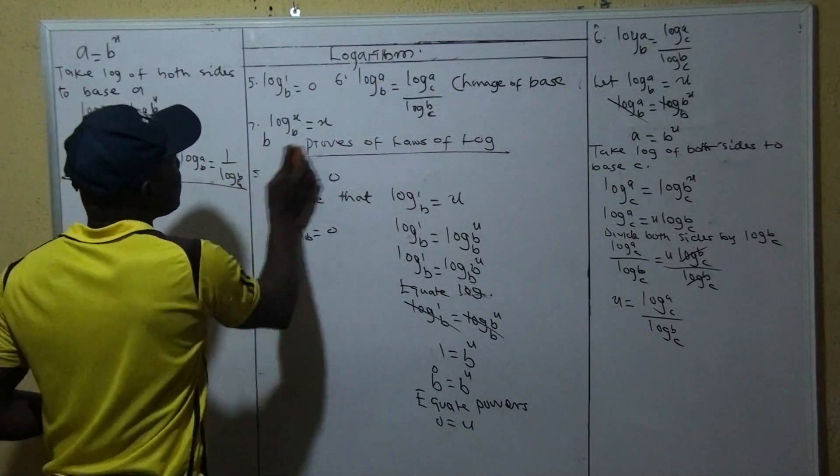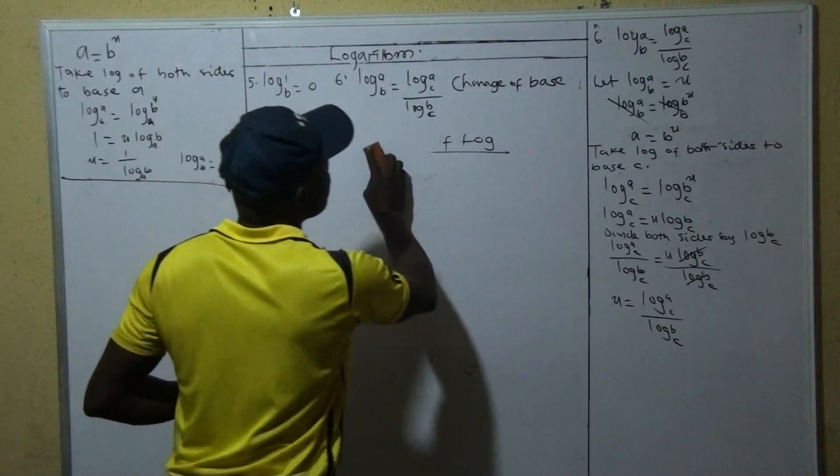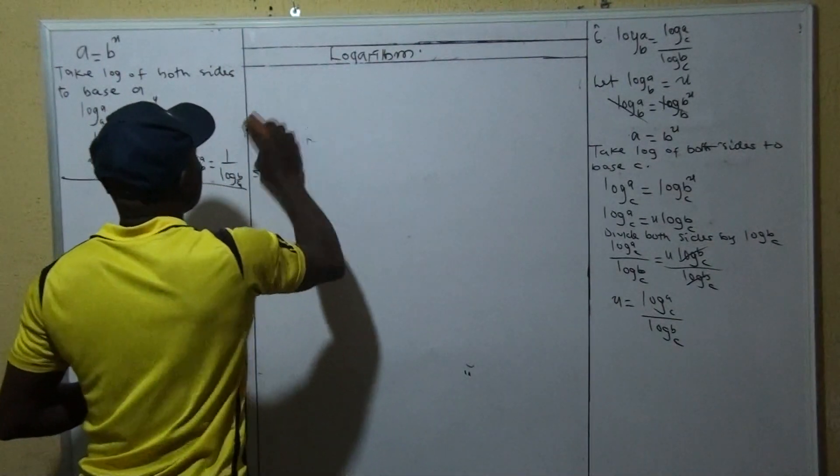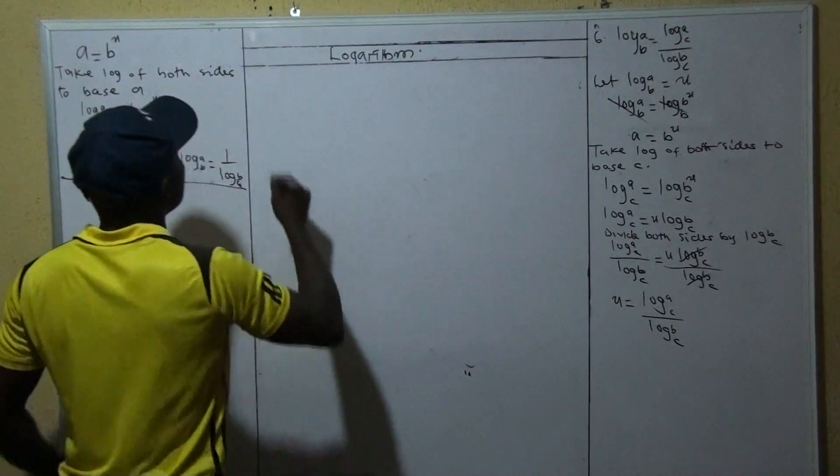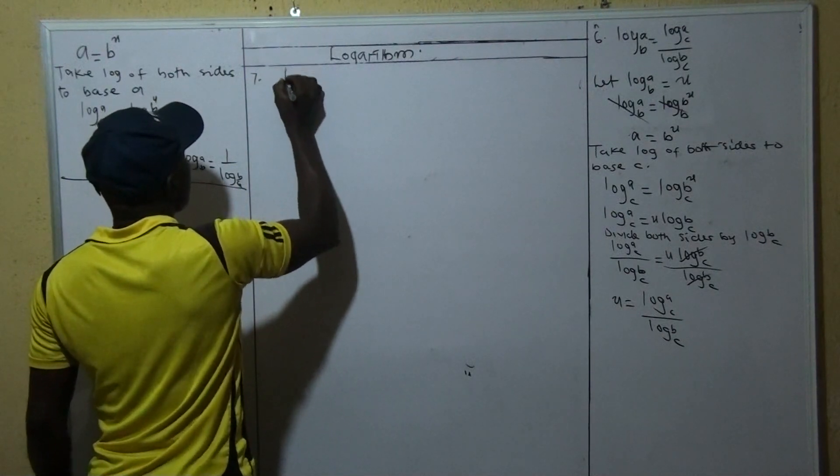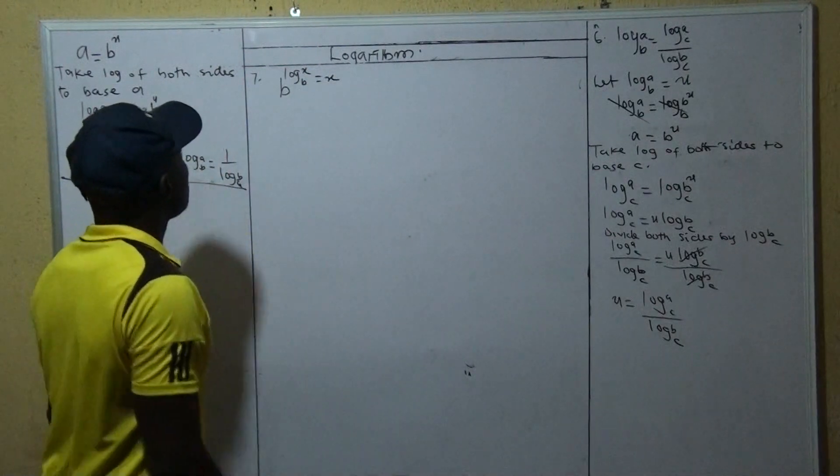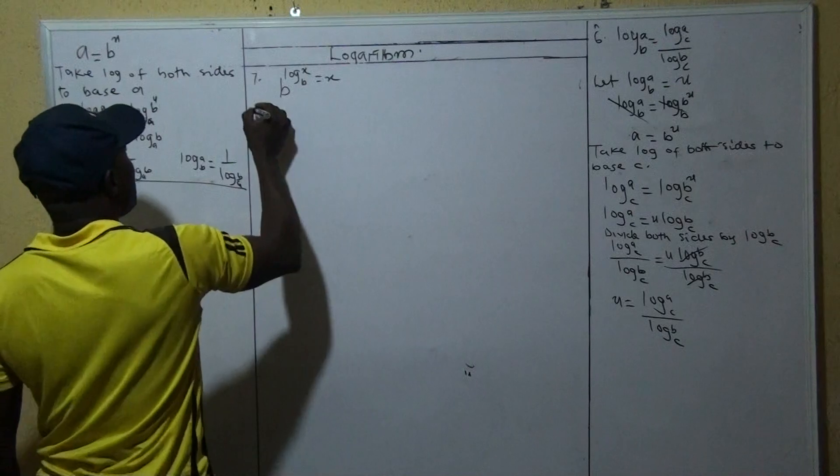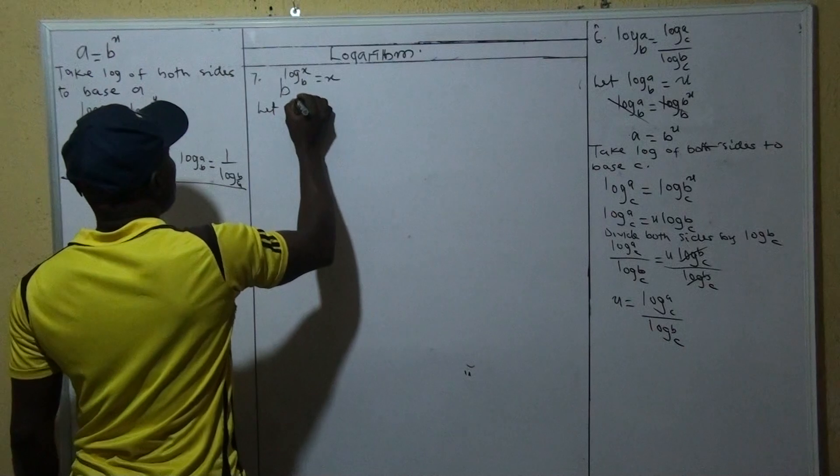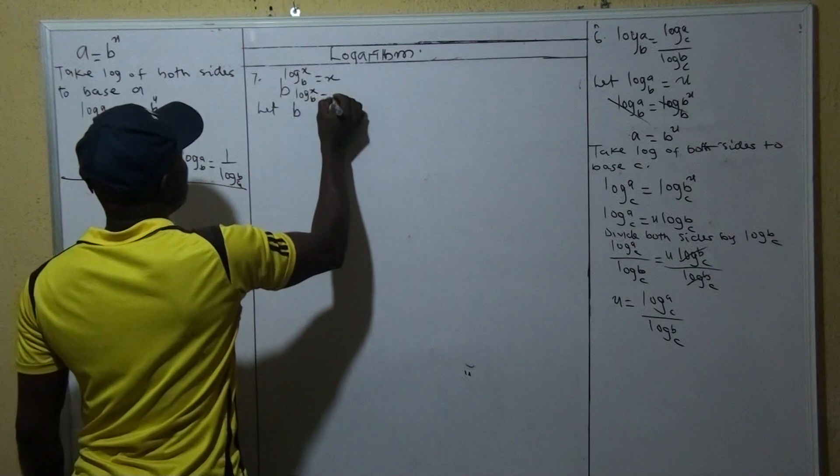The next one, quickly, let's finish the very last one, number seven. This one says if we have B raise power log X to base B is equal to X, I want to show whether it is true. So when I say, let's assume B raise power log X to base B is equal to U.